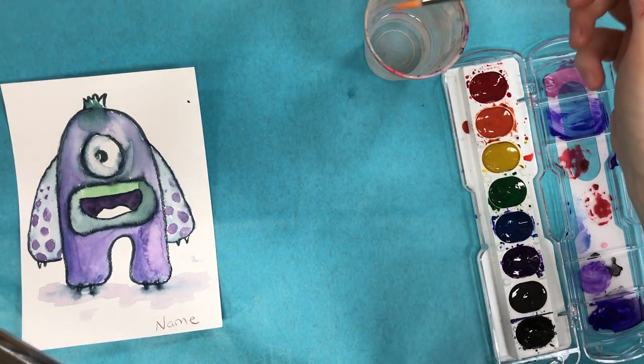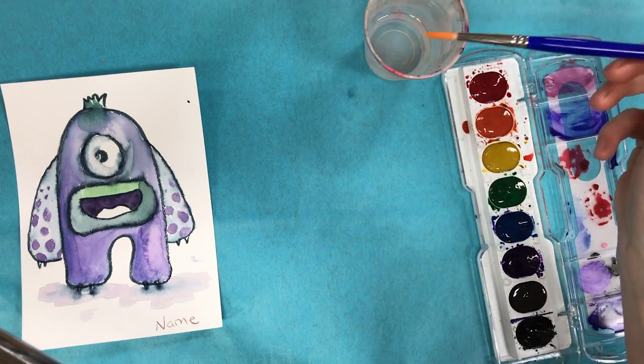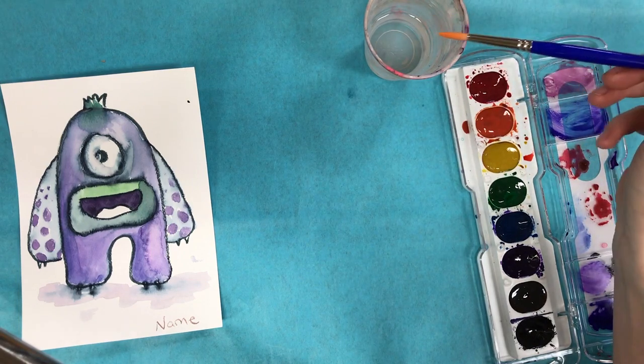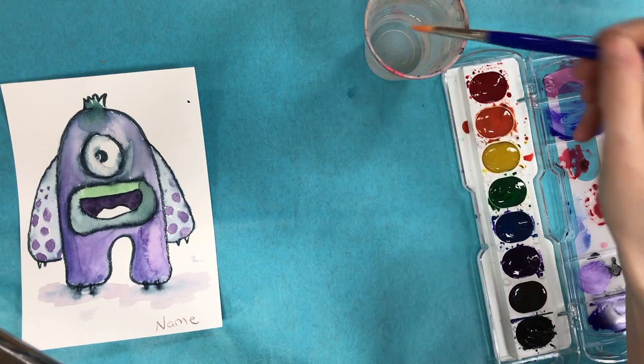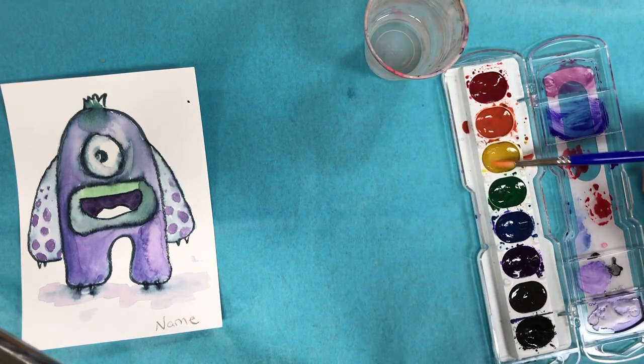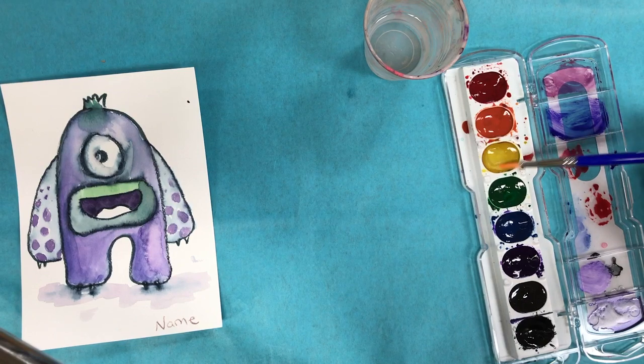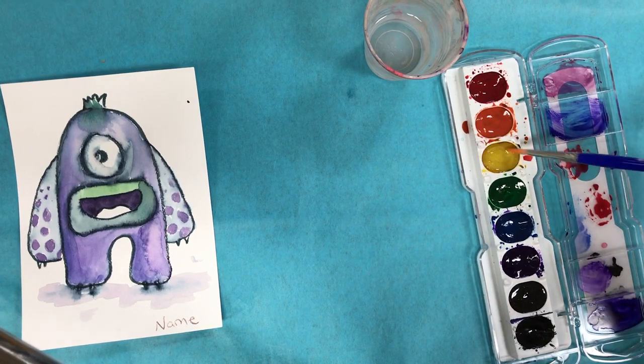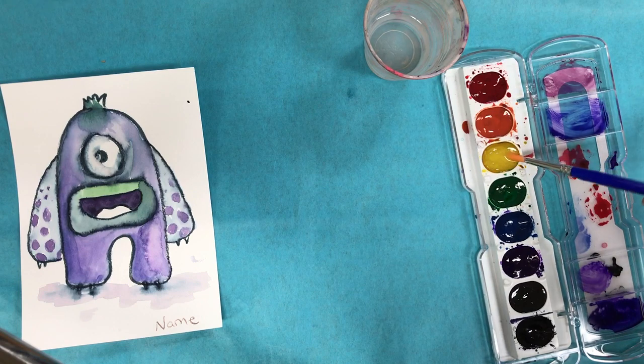So you always start with putting your brush into the water, and I do not scrape the side. I don't do that because I actually want all that water on there, and you want to start with your lightest color first, which is usually that yellow. You want to use that lightest color first so that the yellow remains clean.